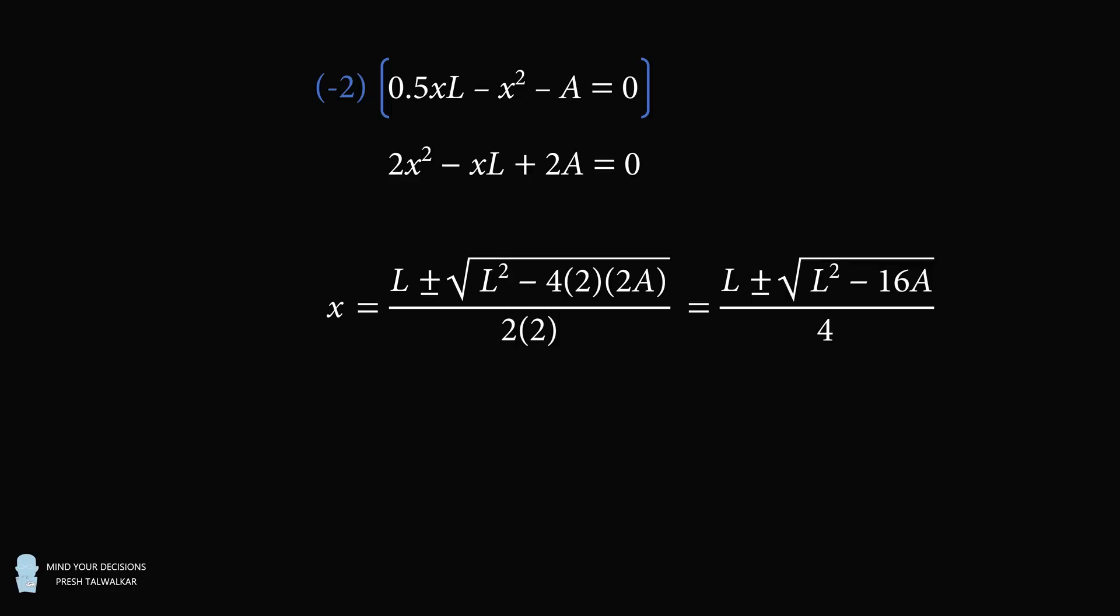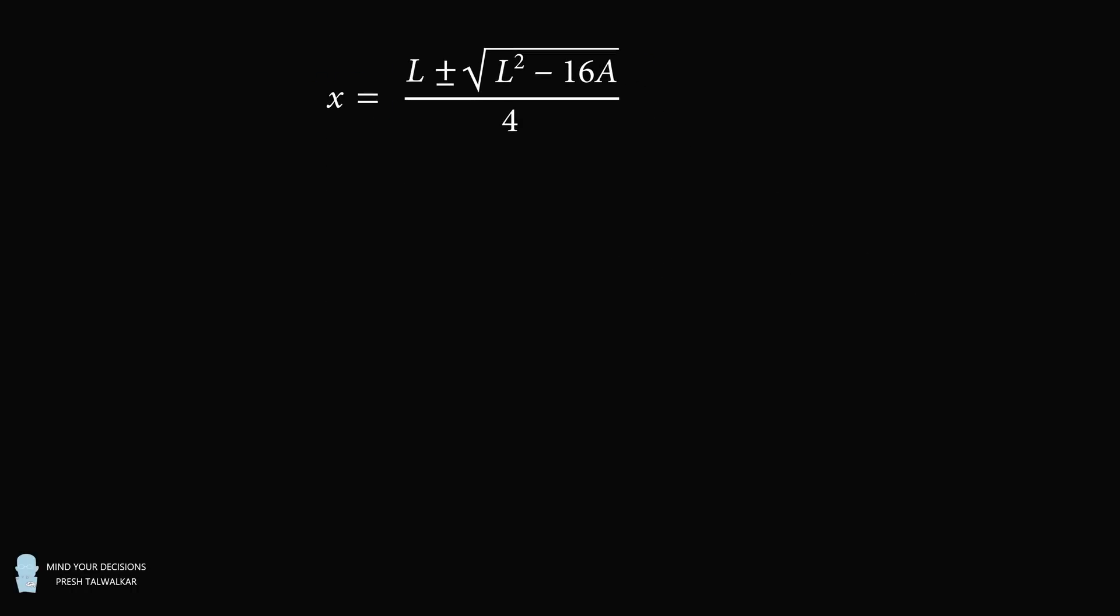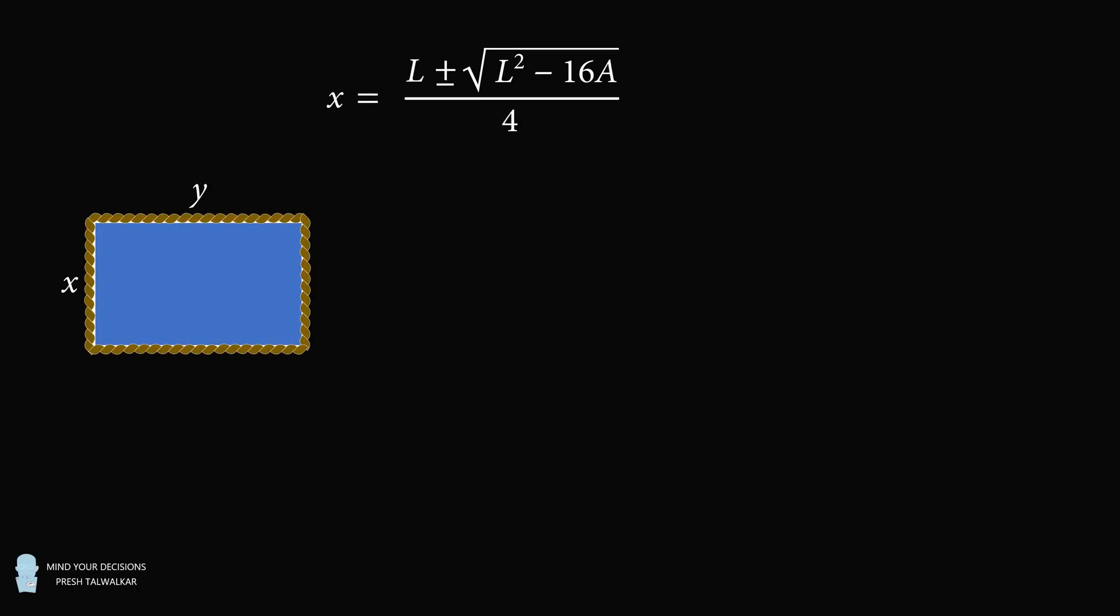We just have one final detail. We have two sides of the rectangle, X and Y. And we want to solve for the smaller side, which we have labeled as X.